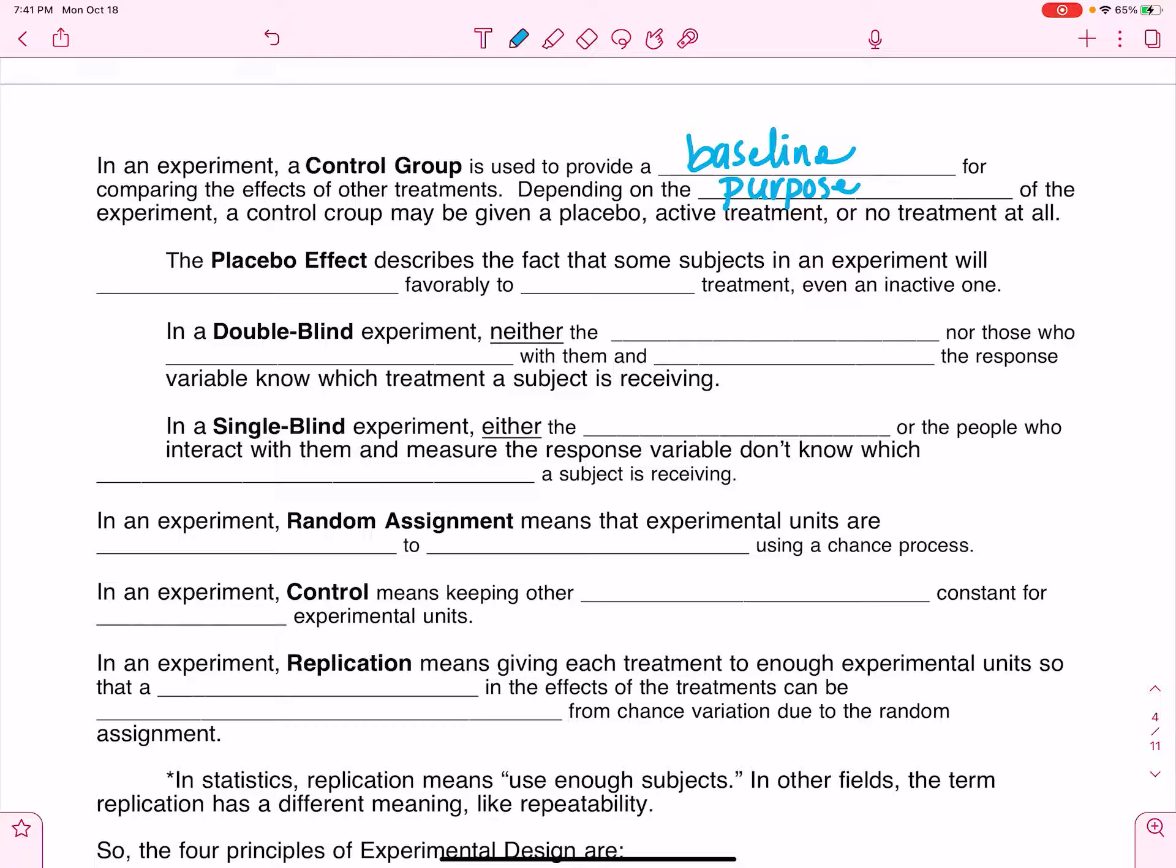The Placebo Effect describes the fact that some subjects in an experiment will respond favorably to any treatment. Let's say I come into class tomorrow and I'm like, I have discovered a new magic smart pill, and if you take it, you're going to ace every test you take.